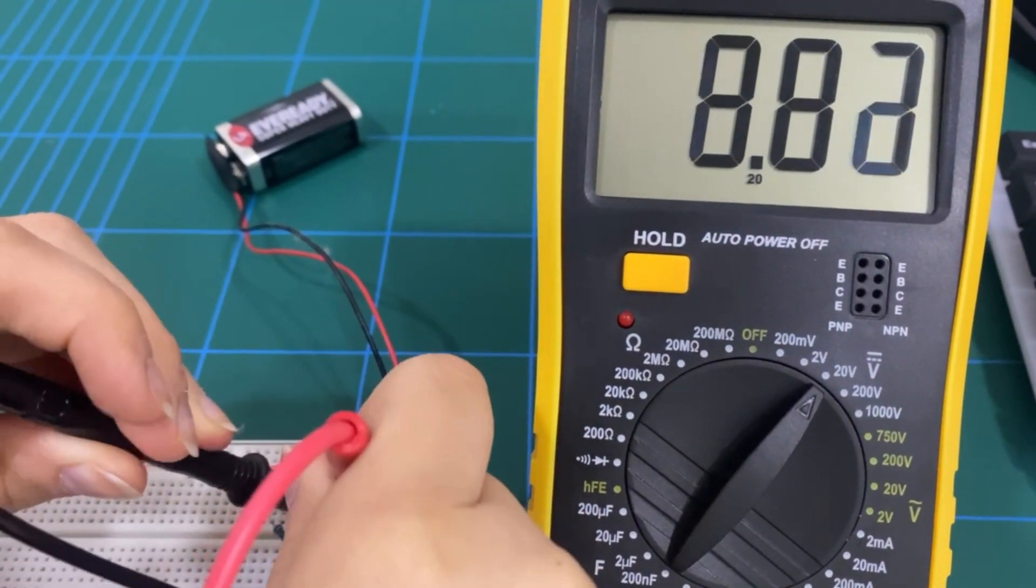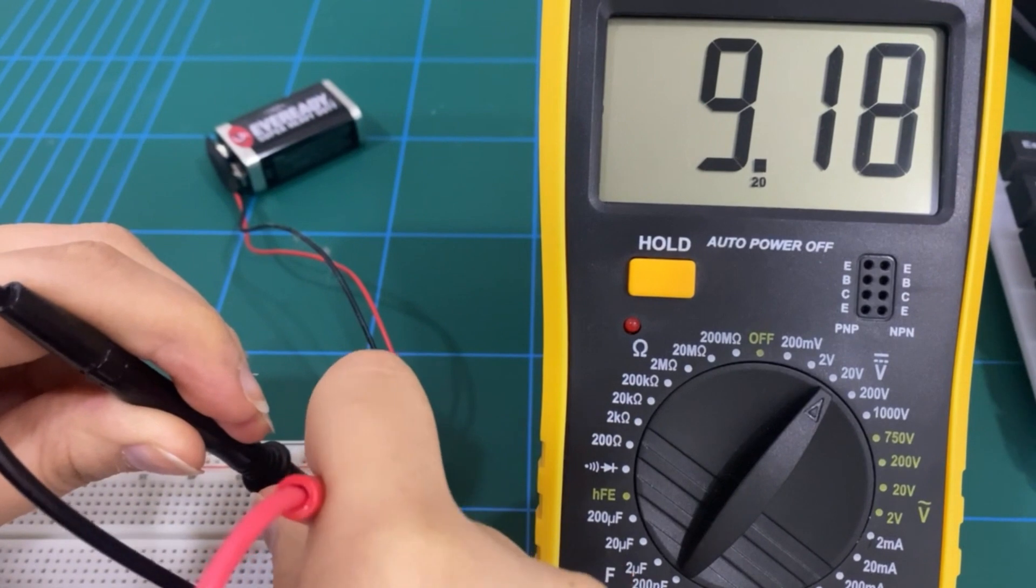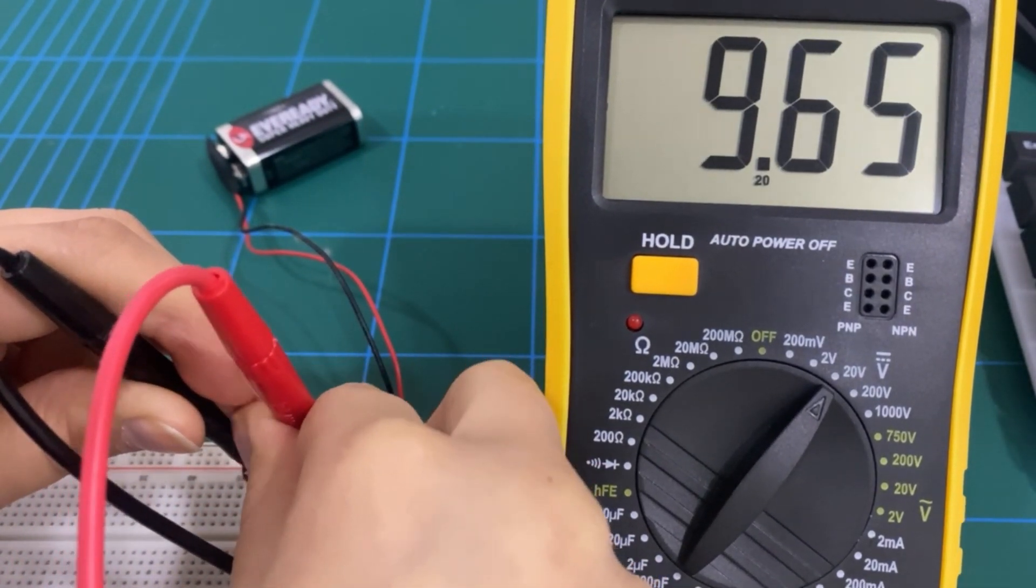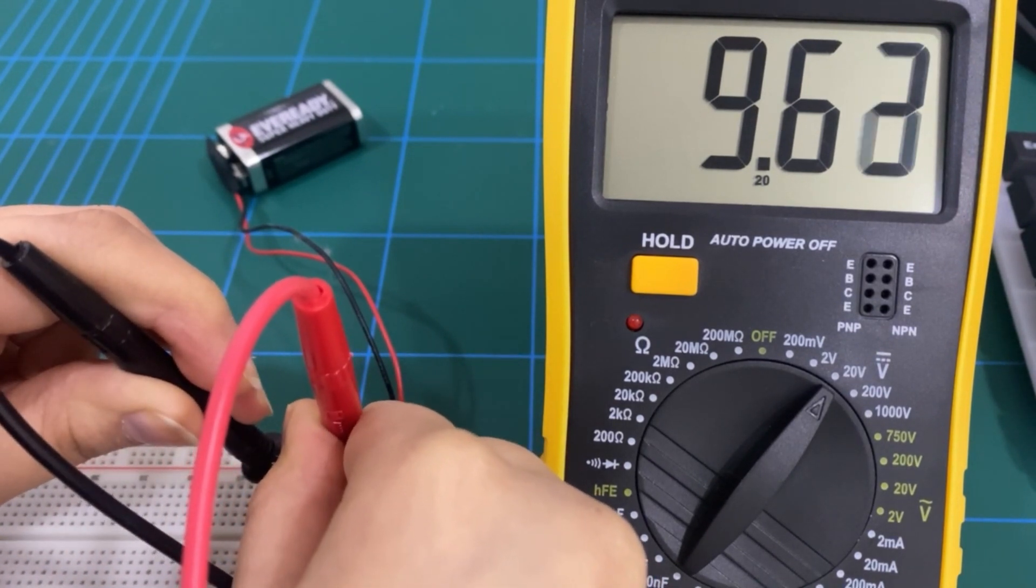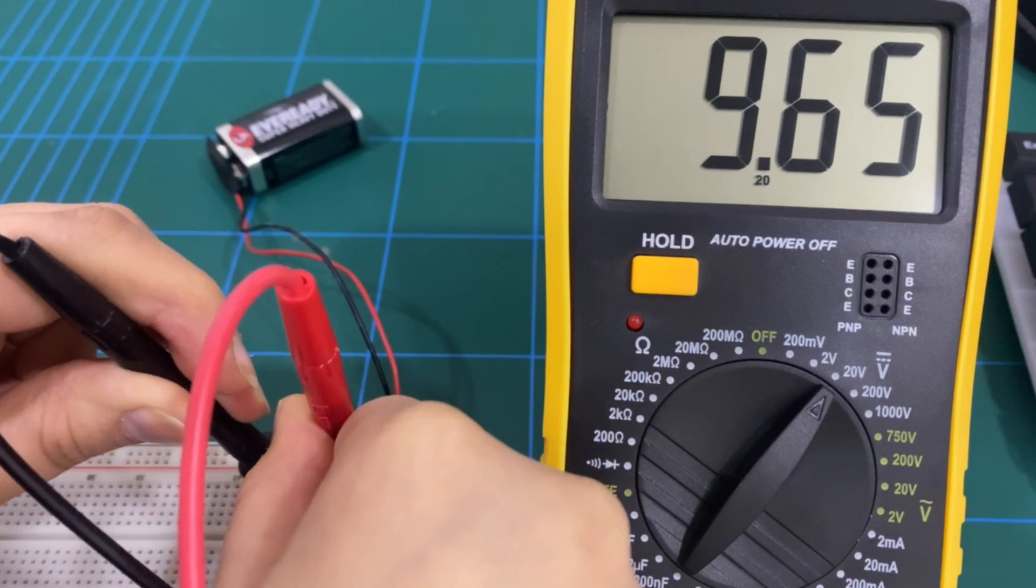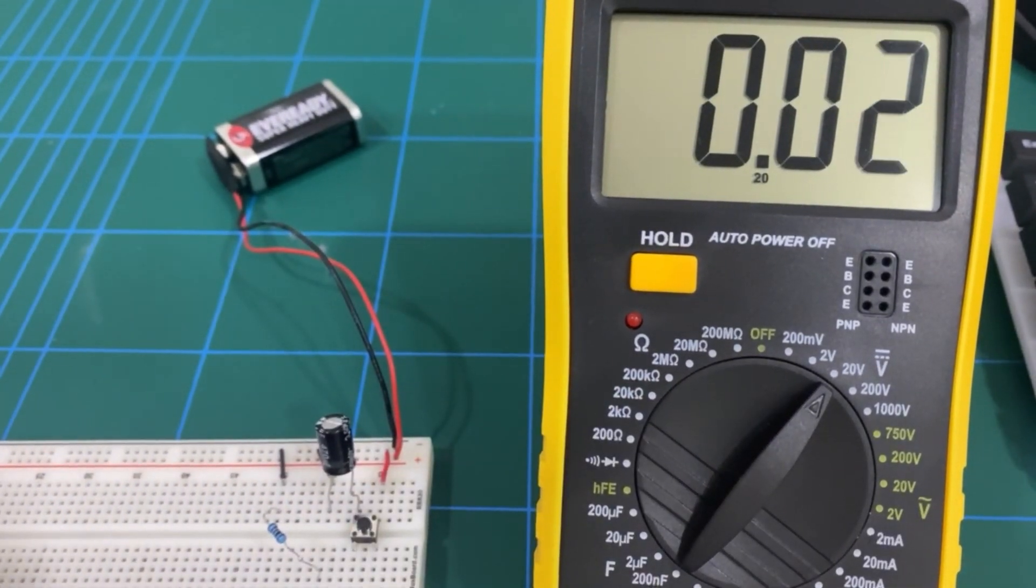And when I take the two leads of the multimeter and try measuring the voltage across the capacitor, I should get about nine volts since the battery that I'm using is about nine volts. The capacitor is fully charged.